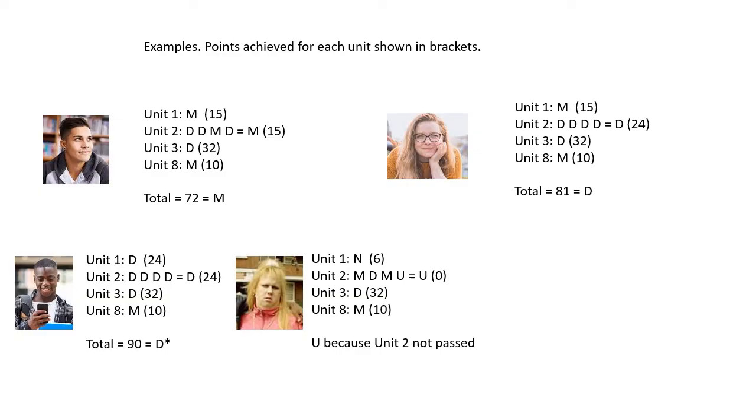This charming young lady here. Unit one, she got a near pass. Six marks. Unit two, M, D, M, U. Her fourth assignment was rubbish. And she gets a U for unit two. Yeah. Because that's her lowest grade. Unit three. Oh, she did fantastically on that. 32 marks. Unit eight, she got a merit. But it doesn't matter. Because unit two, she didn't pass unit two. So, overall, she gets a U. Ouch.